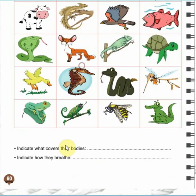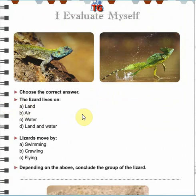Then continue these questions. Indicate what covers their bodies and write it here. Indicate how they breathe. We have studied about the crocodile and recognized how it breathes. I want you also to solve the self-evaluation section and send me your answers — I'm waiting for you. Stay safe and thank you for listening.